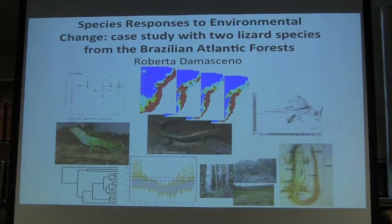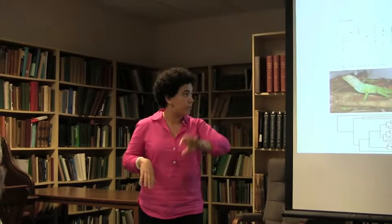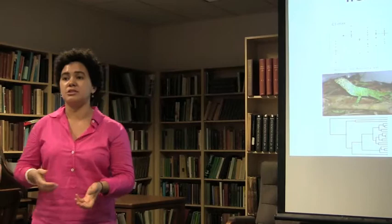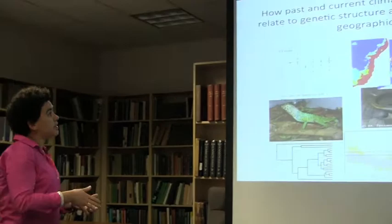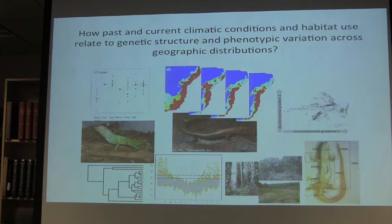I came here because I wanted to learn about evolution, because I wanted to integrate spatial analysis, ecology, and thermophysiology — something I've never done before — and look at species distributions and phenotypic variation across ranges in the Atlantic forest. The overarching question of my dissertation is how past and current climatic conditions and habitat use relate to genetic structure and phenotypic variation across geographic distributions.